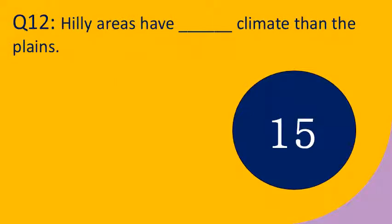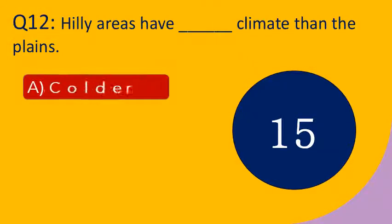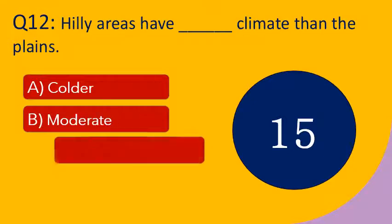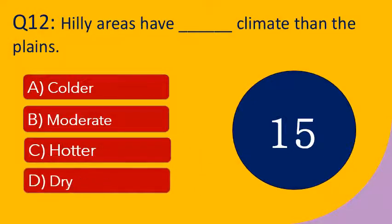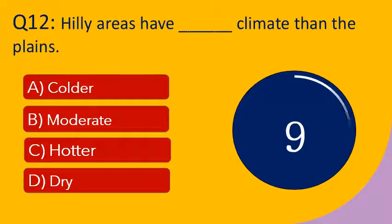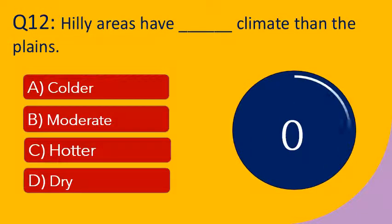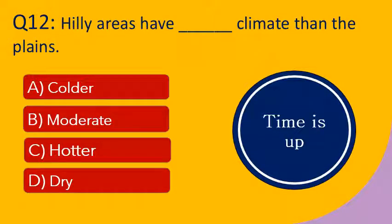Question number 12: Hilly areas have dash climate than the plains. Options are A. Colder, B. Moderate, C. Hotter, and D. Dry. Your time starts now. Your time is up. The right answer is colder. Hilly areas have colder climate than the plains.